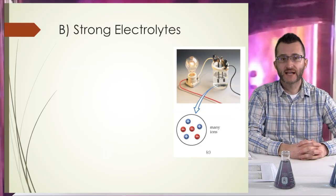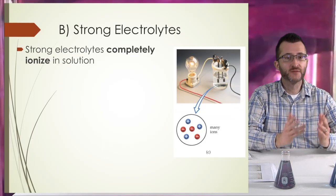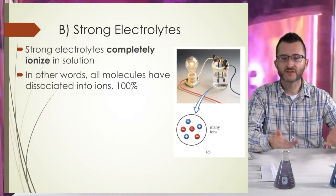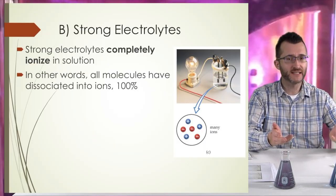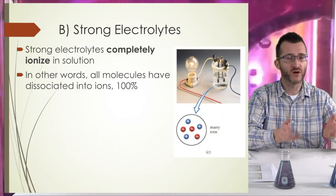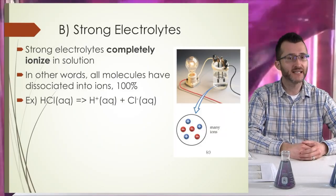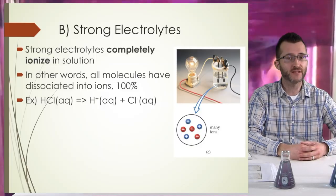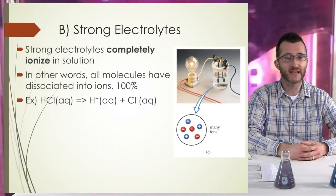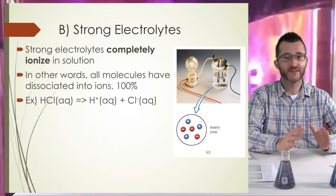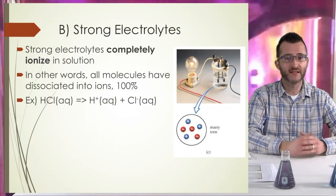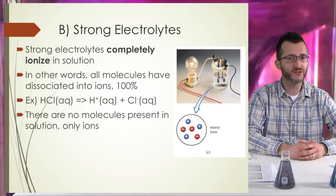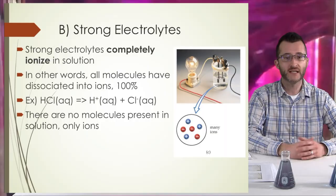Strong electrolytes completely ionize in solution. In other words, all molecules have dissociated into ions 100%. If we look at HCl aqueous, it will yield H+ aqueous plus Cl- aqueous in solution. Every single HCl will break down into ions, so there are no molecules present in solution, only ions.